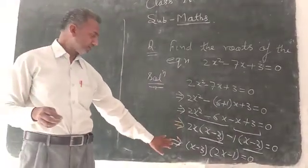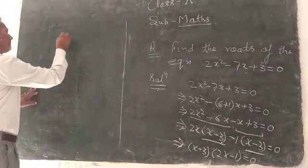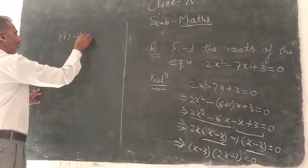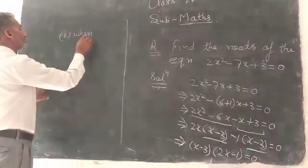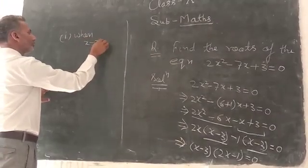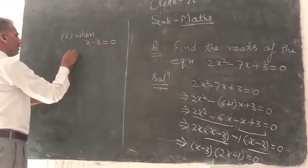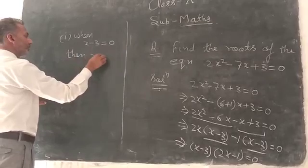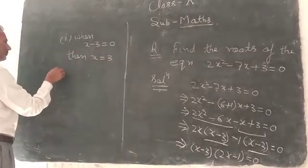Factorization is number 1: where x minus 3 equal 0, then x equal 3. Number 2,